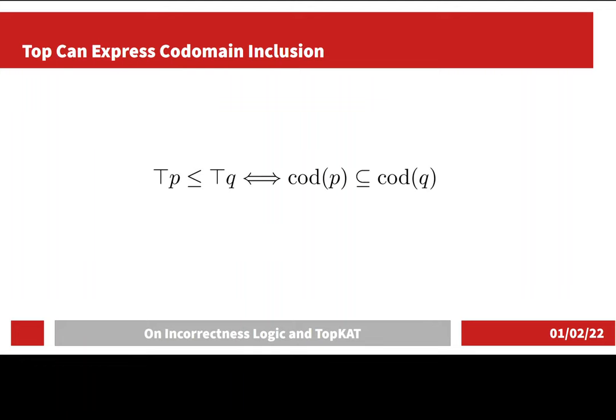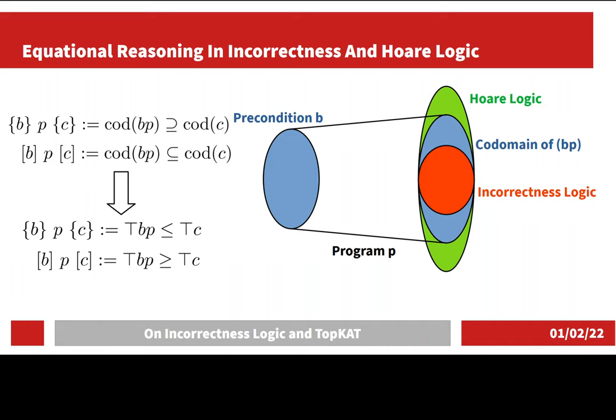Then we find out that the top element indeed can express codomain inclusion, and with that power, we can encode our previous definition using Kleene algebra with top-end tests.